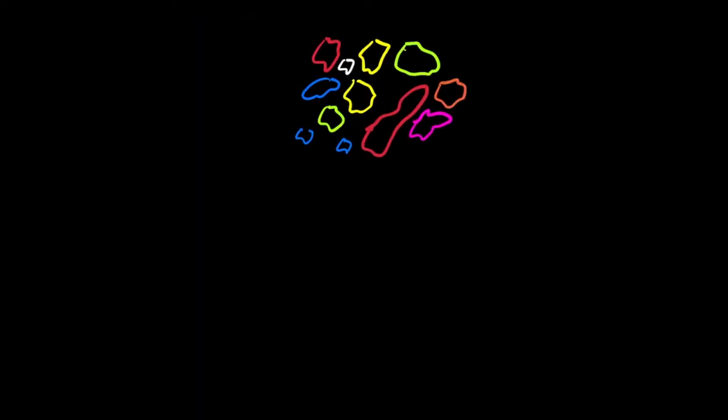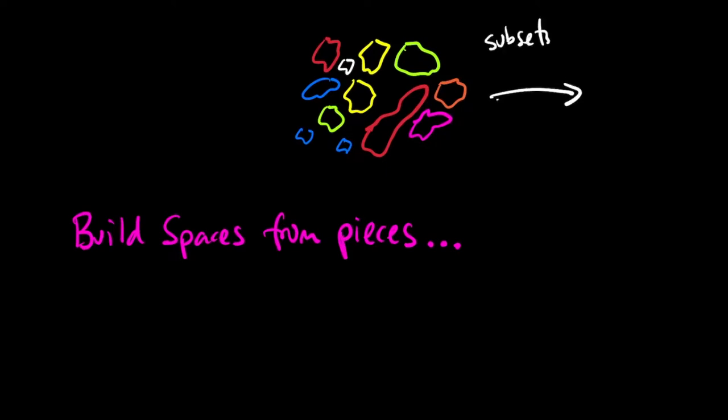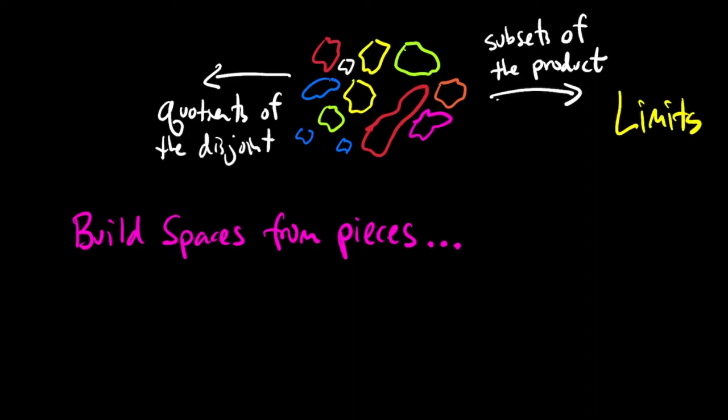For another idea, you might want to try and recognize a space that you're interested in as being built up from simpler pieces. In topology, and in most of mathematics, there are two fundamentally different ways to build up an object from simpler pieces. One way involves taking products of those pieces, or subsets of the product of those pieces. Those are called categorical limits. And the other way is to glue the pieces together by some sort of relation. That's the same as taking quotients of the disjoint union, and those are called categorical colimits.